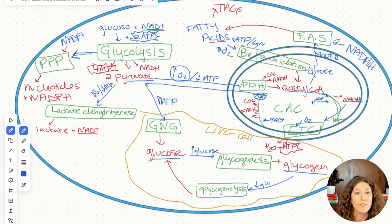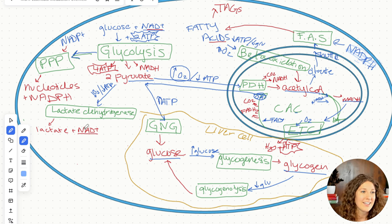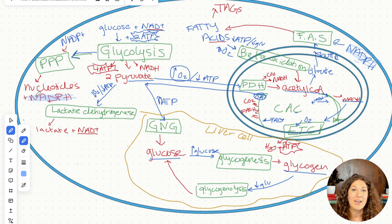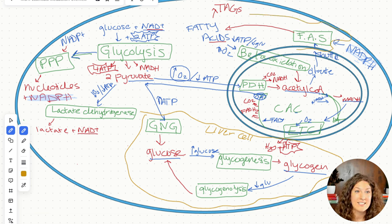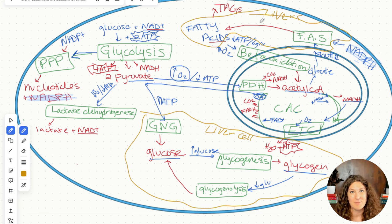NADPH is needed for fatty acid synthesis because it's a series of reduction reactions and we need an electron carrier. What's really cool is where this NADPH comes from: our pentose phosphate pathway. Both the pentose phosphate pathway and the fatty acid synthesis pathway happen when we have plenty of energy — our energy is fine, we have no energy need, and we're in storage mode. Fatty acid synthesis happens mostly in liver cells.